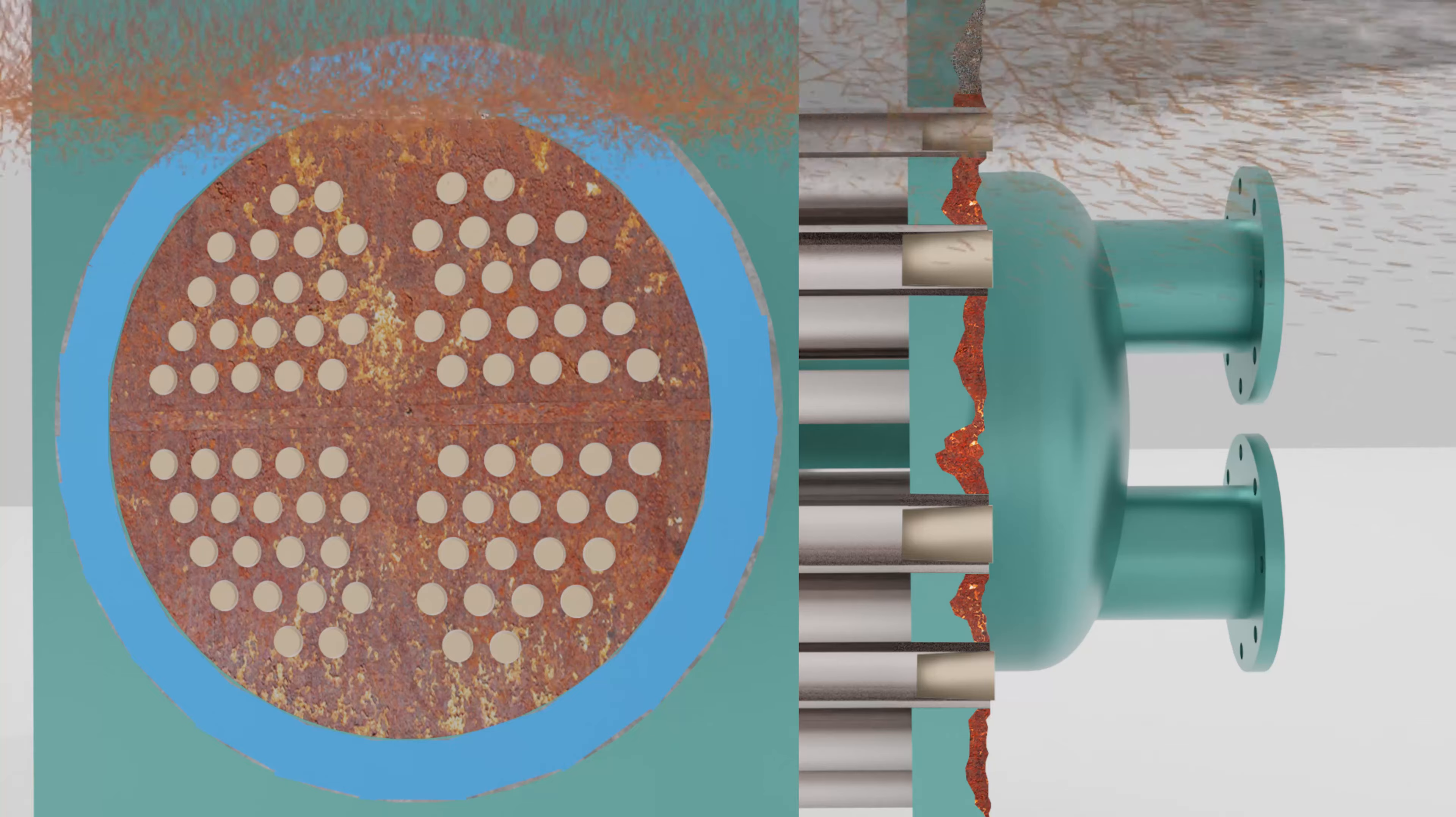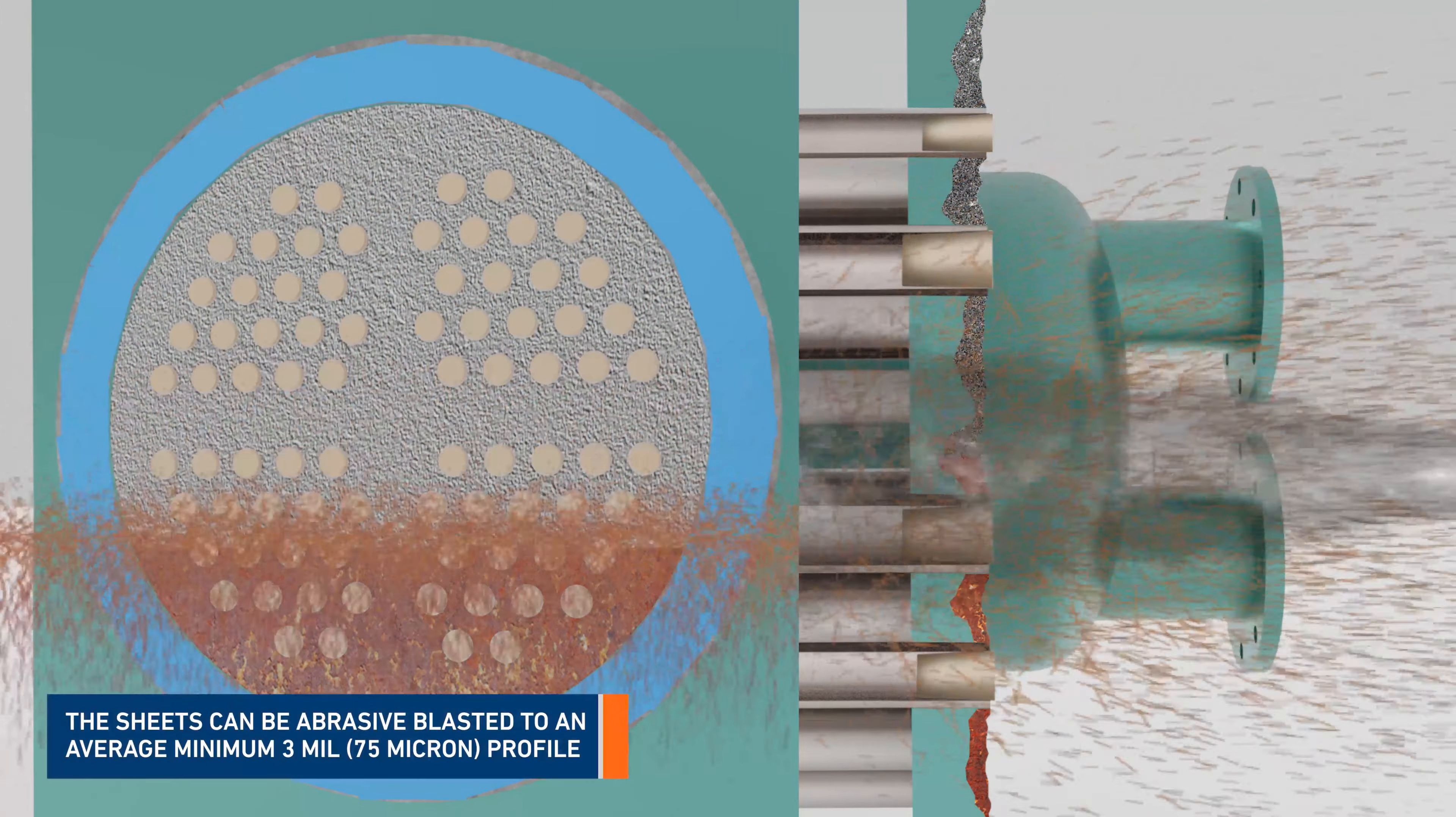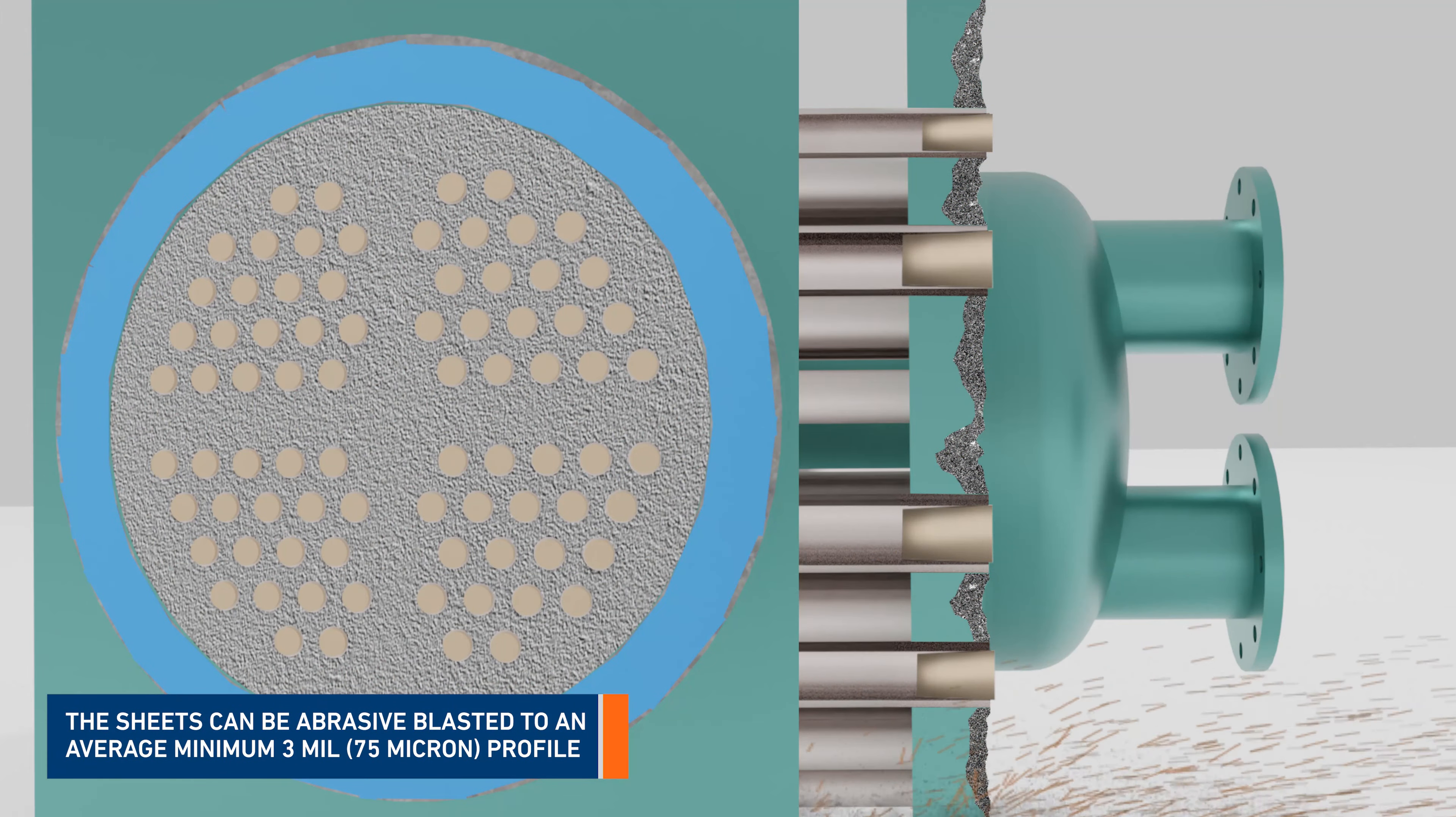Now that the tubes are protected, the sheets can be abrasive blasted to an average minimum of a 3 mil, 75 micron profile.